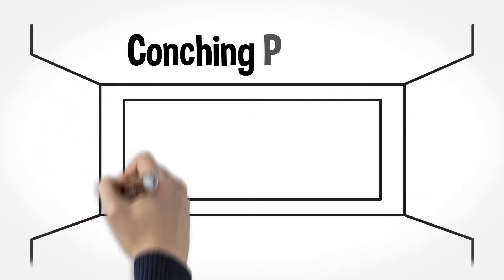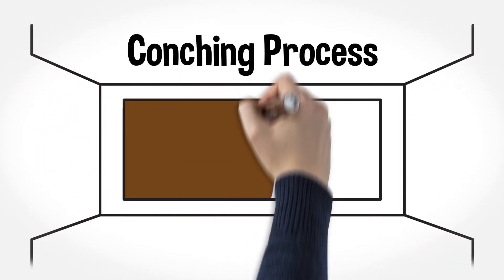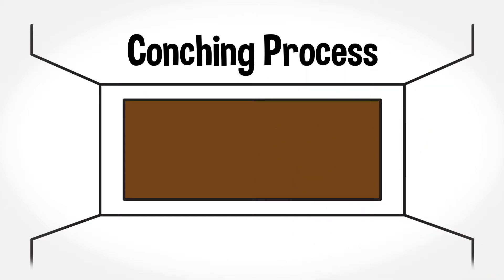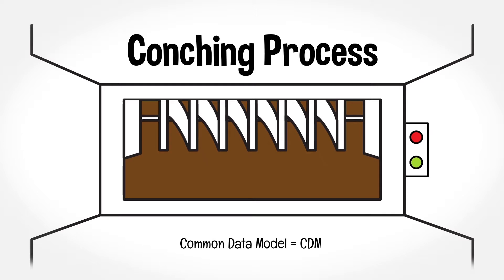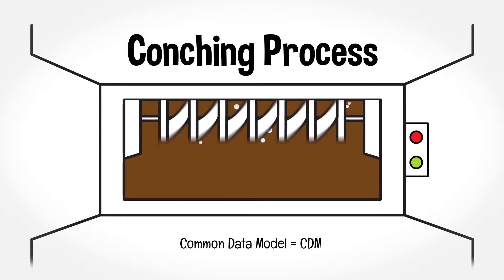Next, the conching process grinds the crumb with more cocoa butter, turning the mixture into silky milk chocolate. Similarly, PATH network institutions use the common data model or CDM to further refine their EHR data to create a consistent format. The CDM organizes data from multiple institutions into a standard structure so that each healthcare system is speaking the same language. This helps researchers avoid having to transform and prepare data for each research question.